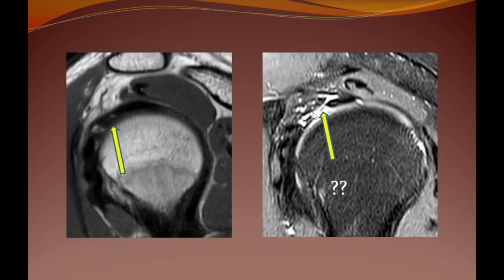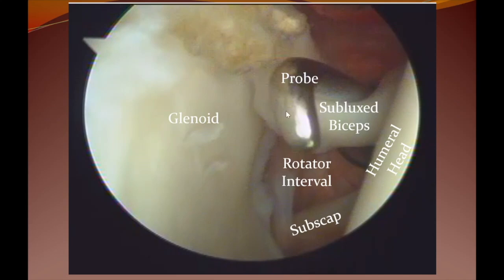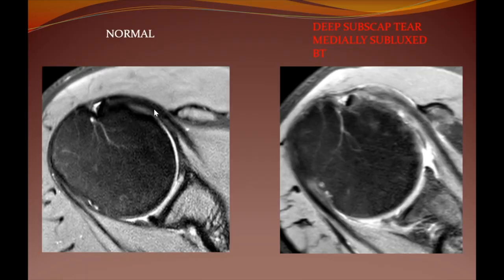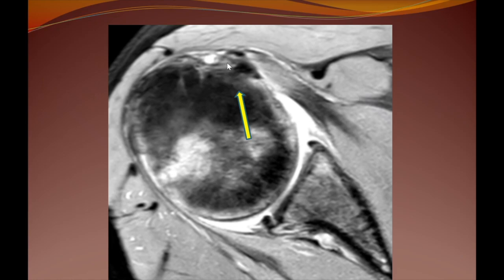Another example where the normal biceps tendon and SGHL are not visualized in their normal place, and the coracohumeral ligament is also not seen properly. Arthroscopically, these patients may show a very lax biceps which can be easily subluxed. Another picture shows a pathological biceps being partially cut — this is the rotator interval area. Coming to graver injuries: an abnormal subscapularis with tendinosis and tear shows a medially subluxed tendon still within the groove. In another case, with a high-grade subscapularis tear, the biceps tendon is out of the groove.